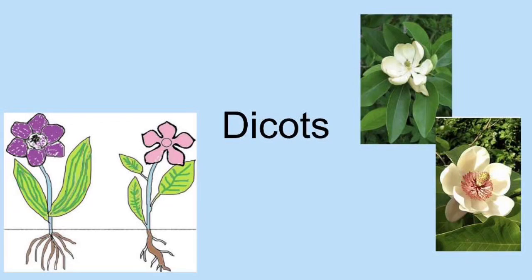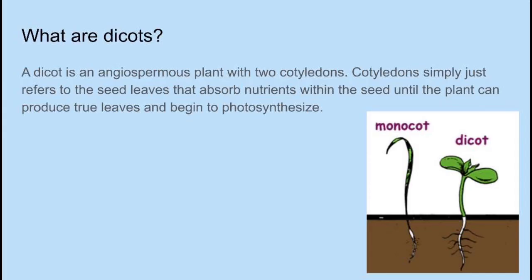For our topic, we have a really interesting one — we did dicots. So what are dicots? They're basically an angiospermous plant with two cotyledons. Cotyledons are basically just the seed leaves that absorb nutrients within the seed until the plant can produce true leaves and begin to photosynthesize. We inserted a picture on this slide of the monocot versus a dicot so that you can have a visual representation of the difference.